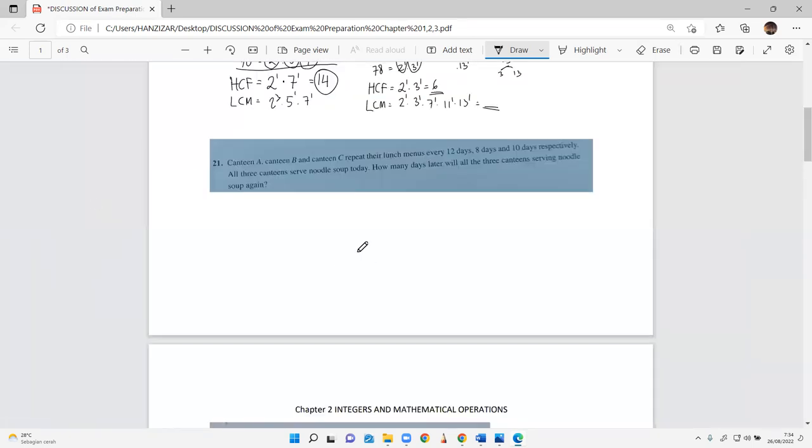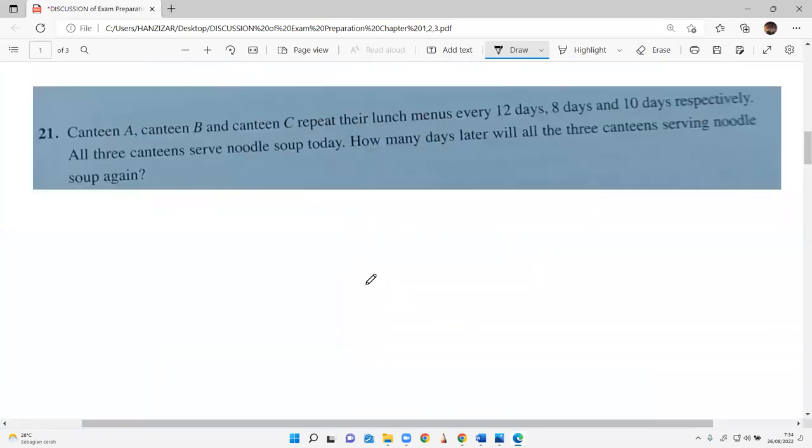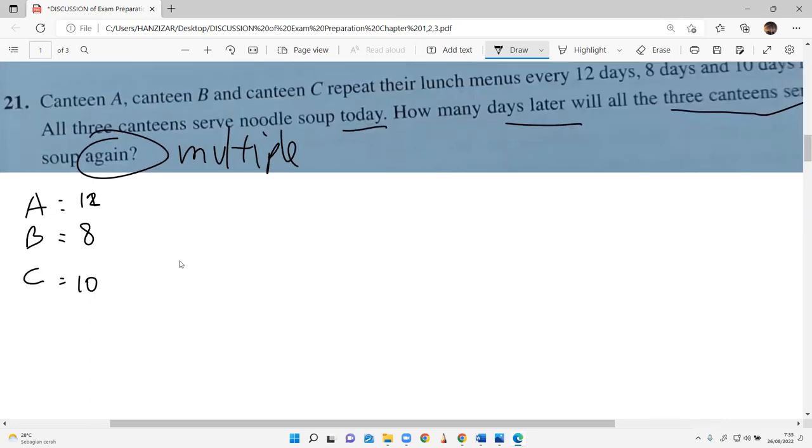Canteen problem, number 21. If you have the workbook, open it. Canteen A, canteen B, and canteen C repeat their lunch menus every 12 days, 8 days, and 10 days. If all 3 canteens serve noodle soup today, how many days later will all 3 canteens serve the soup again? Multiple, again means how many times later. So you do LCM.